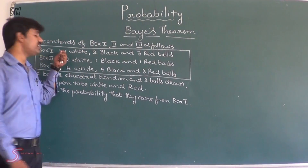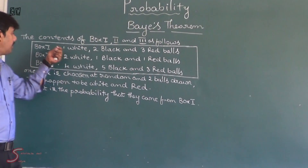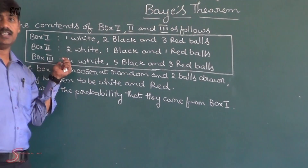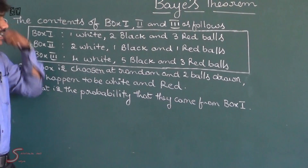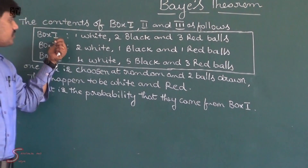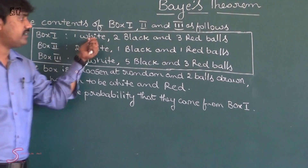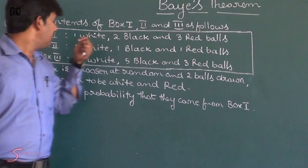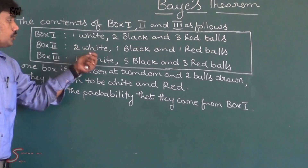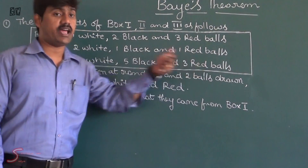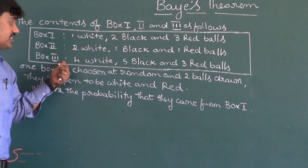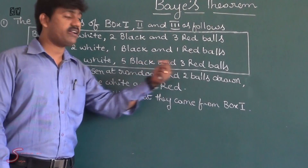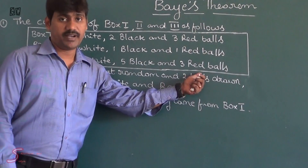So we have 3 boxes: box 1, box 2, and box 3. The contents are: in box 1 we have 1 white, 2 black, and 3 red balls. Whereas in box 2 we have 2 white, 1 black, and 1 red ball. Whereas box 3 contains 4 white, 5 black, and 3 red balls.